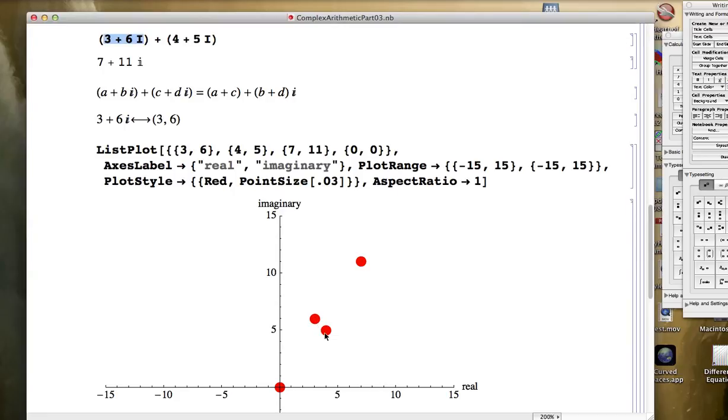This dot, whose coordinates are 4, 5, represents the complex number 4 plus 5i. This dot up here, whose coordinates are 7, 11, take a moment to look at that,